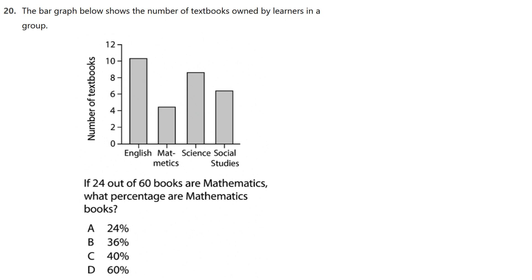20. The bar graph below shows the number of textbooks owned by learners in a group. If 24 out of 60 books are mathematics, what percentage are mathematics books? A. 24%, B. 36%, C. 40%, D. 60%.